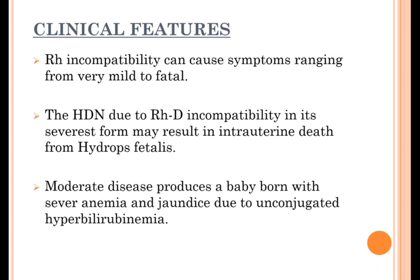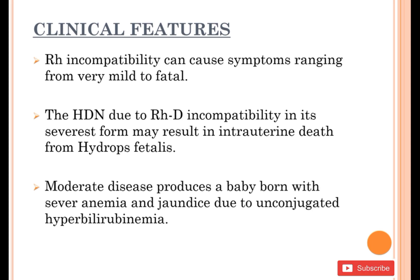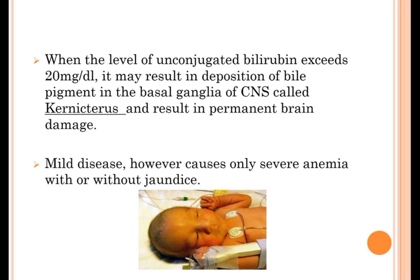Clinical features. RH incompatibility can cause symptoms ranging from very mild to fatal. The HDN due to RHD incompatibility in its severest form may result in intrauterine death from hydrops fetalis. Moderate disease produces a baby born with severe anemia and jaundice due to unconjugated hyperbilirubinemia. When the level of unconjugated bilirubin exceeds 20 mg/dL, it may result in deposition of bile pigment in the basal ganglia of the CNS, called kernicterus, resulting in permanent brain damage. Mild disease causes only severe anemia with or without jaundice.